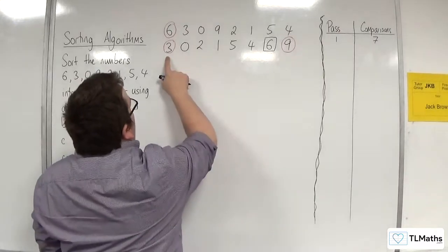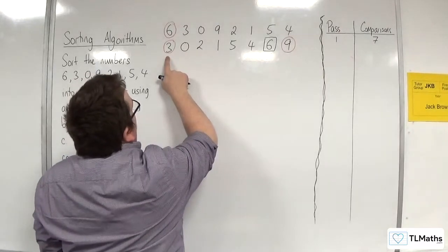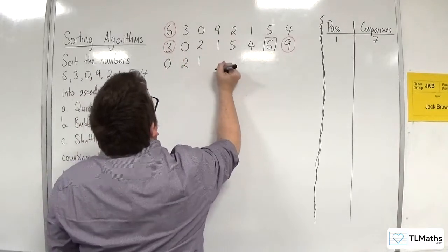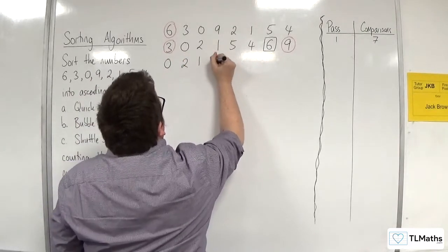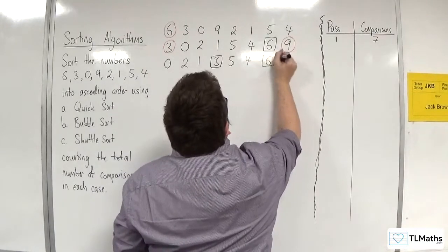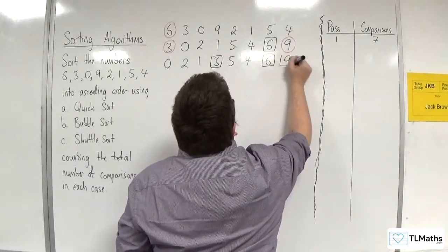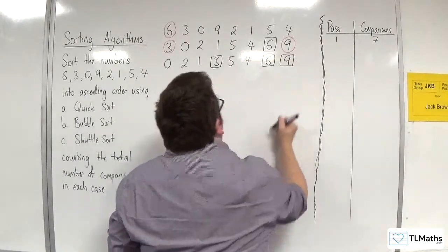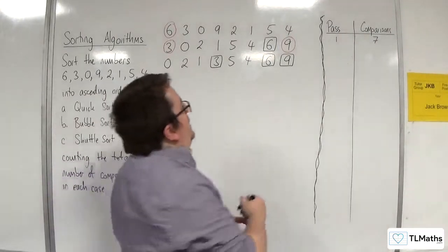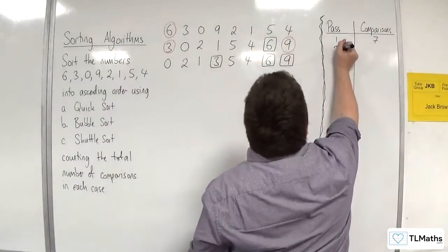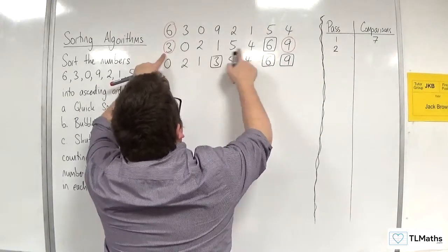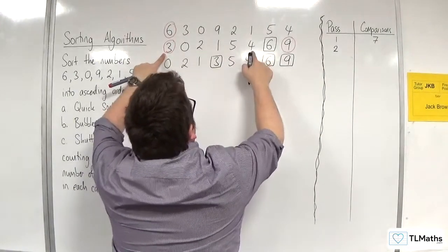Now any number less than 3 goes to the left, which is 0, 2, and 1. Then we've got the 3, then 5, then 4. 6 is then boxed. 9 has got nothing to be compared against and so gets boxed. In the second pass, we compared 3 with 0, 2, 1, 5, and 4 — so 5 comparisons.